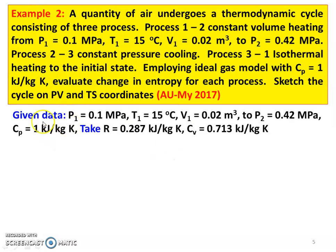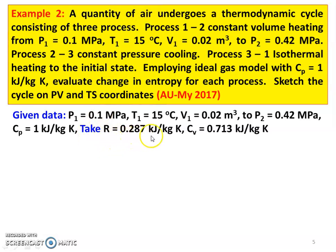Given data: P1 equals 0.1 MPa, T1 equals 15 degree Celsius, V1 equals 0.02 m³, P2 equals 0.42 MPa, Cp equals 1 kJ per kg Kelvin. The fluid is air. Take R equals 0.287 kJ per kg Kelvin, and Cv equals Cp minus R, which equals 0.713 kJ per kg Kelvin.